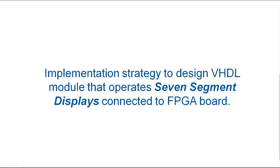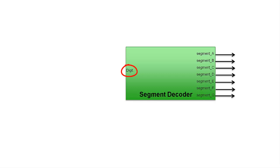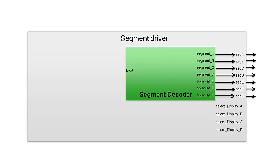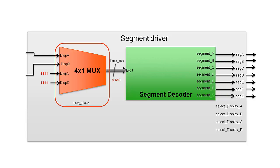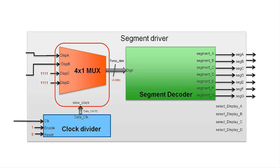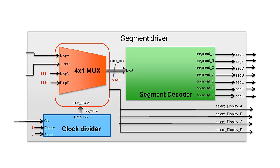Before going further, it's better to discuss the implementation strategy to design a VHDL module that operates a 7-segment display connected to the FPGA port. First, we need to create a segment decoder that should decode a 4-bit binary number into 7 segments. A 4-to-1 MUX is needed to select one of the input data and push it to the segment decoder. A clock divider module is also helpful to slow down the clock so that the data should be visible on the segment display, because the FPGA clock is 50 MHz. This can be achieved by making a counter. The FPGA board has 4 segment displays. The segment driver module will host all three components — segment decoder, 4-to-1 MUX, and clock divider — and provides a way to select these 4 displays to push data to each display using multiplexing.